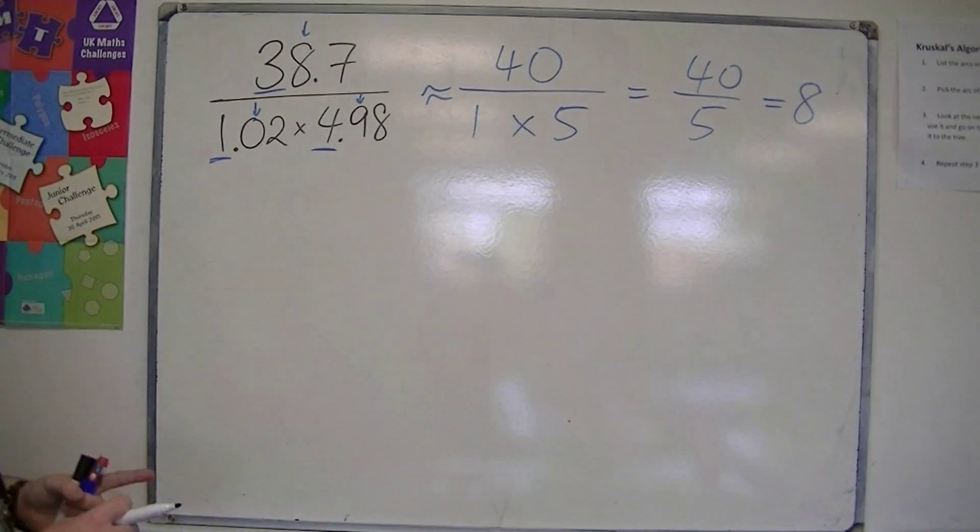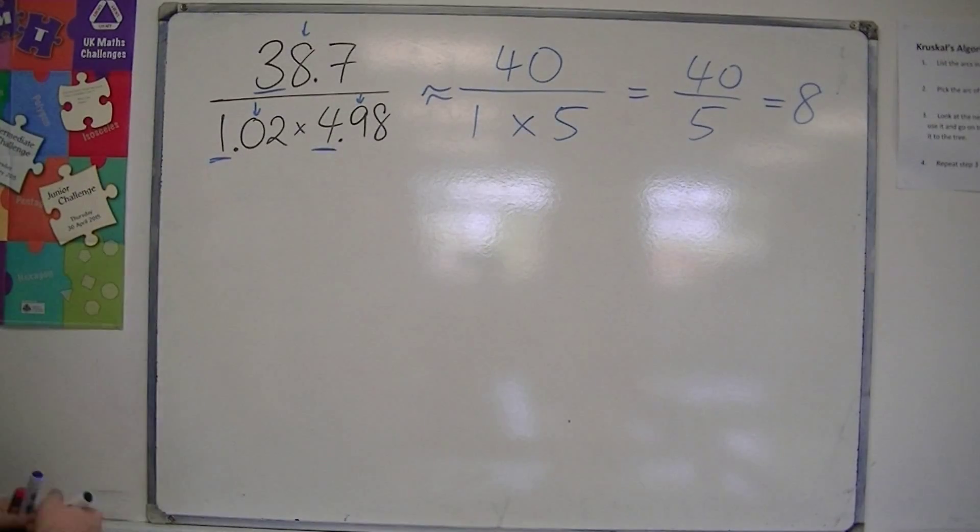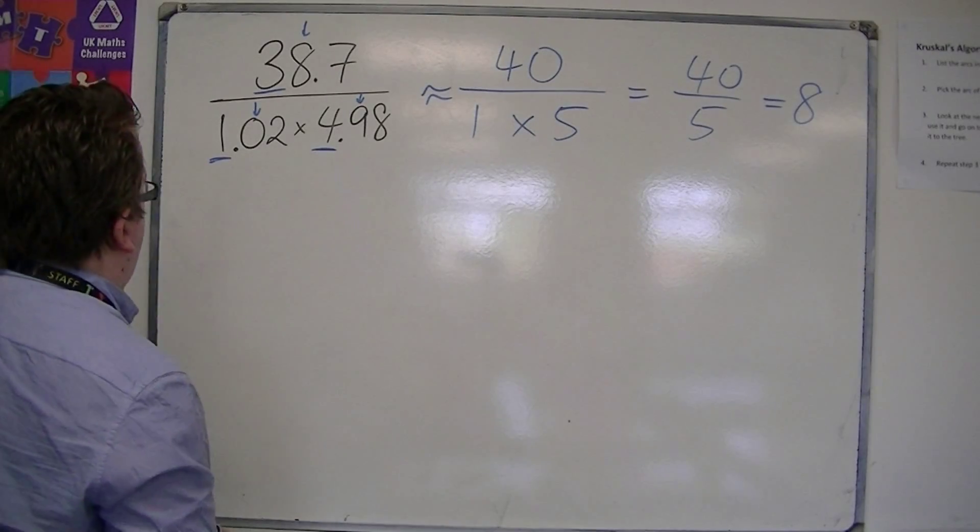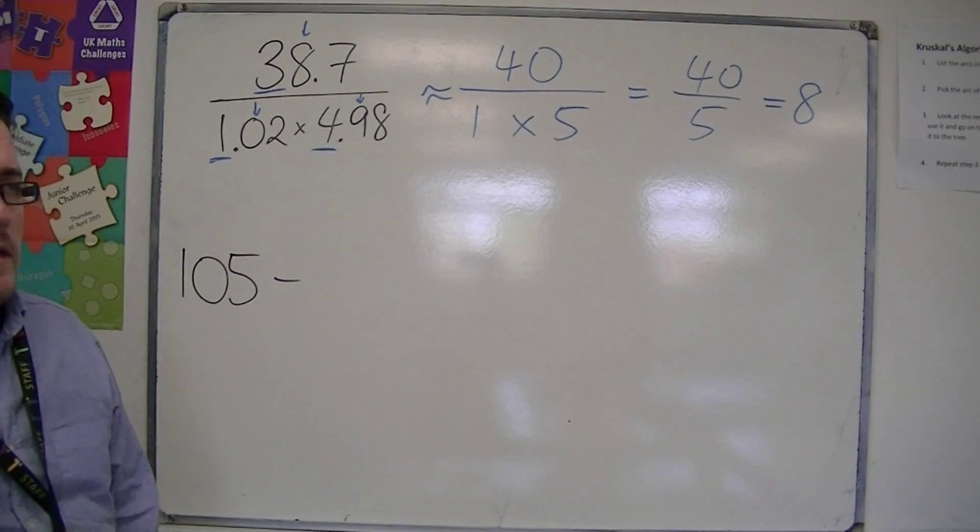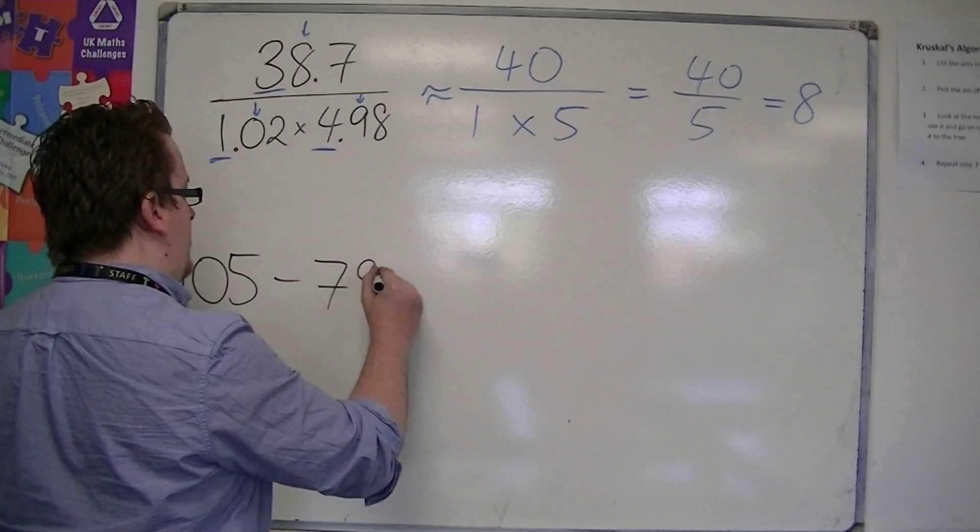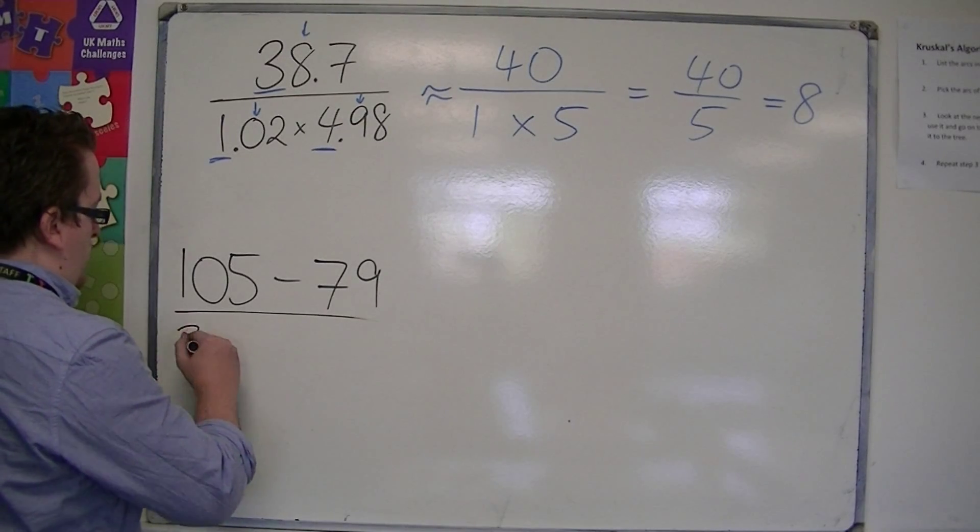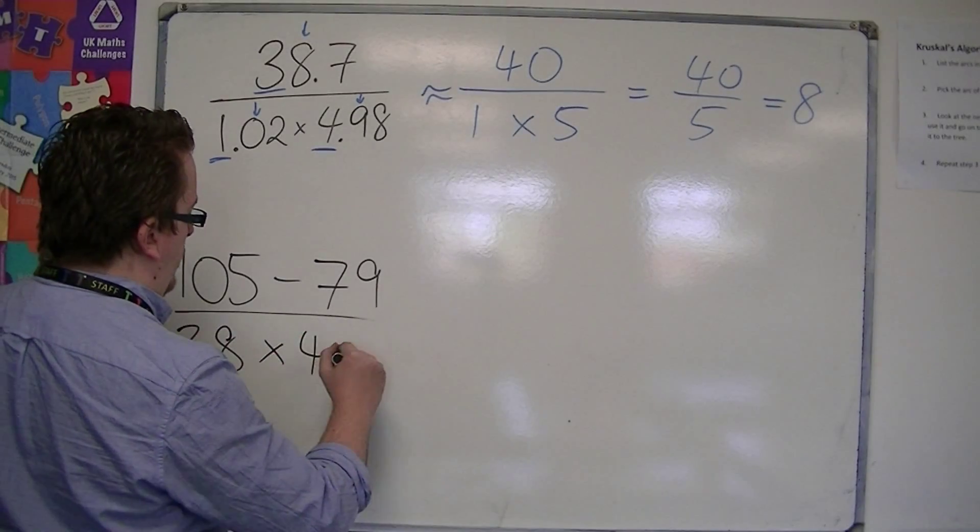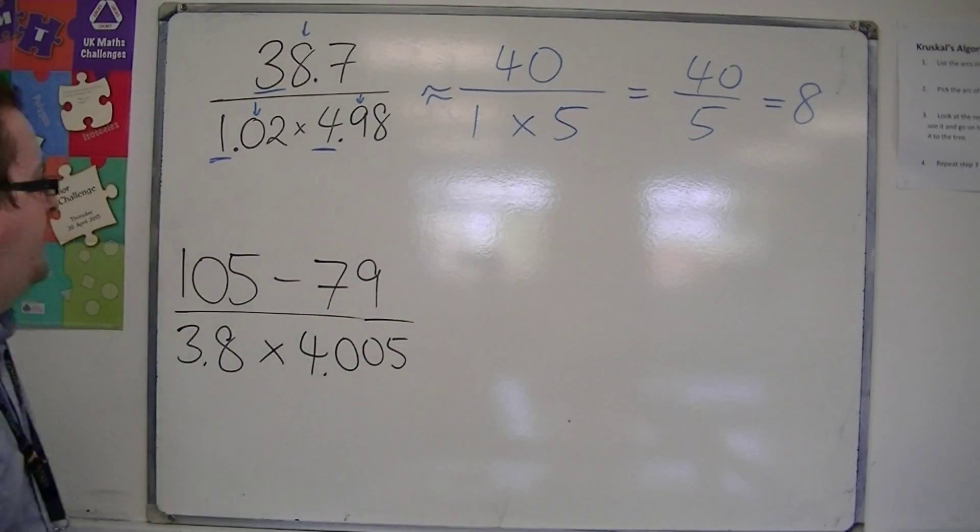So round each bit individually first and do the calculation. Let's do one more just to make sure we're happy. So let's have something like 105 take away 79, all over, let's have 3.8 times by 4.005.